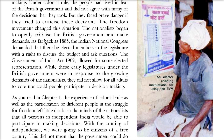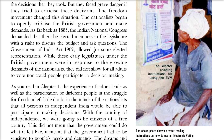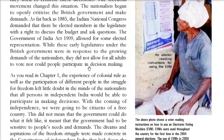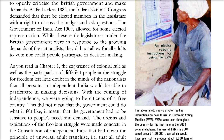The nationalists began to openly criticize the British government. In 1885, the Indian National Congress (INC) demanded elected members in the legislature - they needed the right to discuss the budget and ask questions. The Government of India Act 1909 allowed for some elected representation, but this was in response to the growing demands of nationalists. They didn't allow everyone to vote; the participation was not whole, only a few adults were allowed to vote.